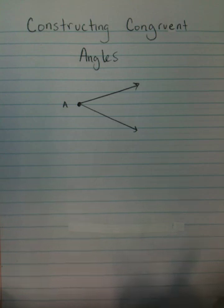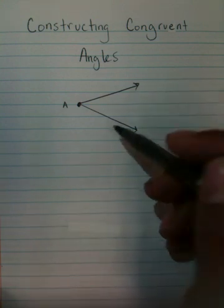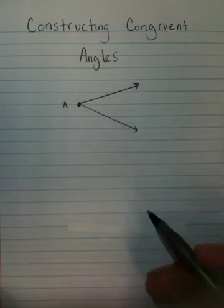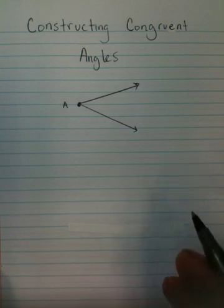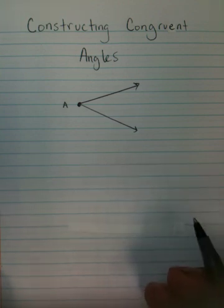Now when constructing congruent angles, what you're being asked to do is make a duplicate set of rays that have the same distance apart as the picture you see in front of you. You can visualize it as a crocodile mouth, and you're saying how can I make that crocodile mouth the exact same openness or distance?